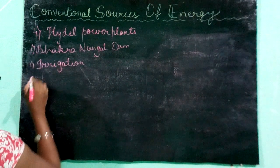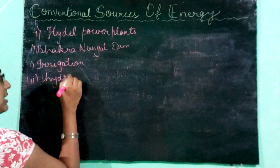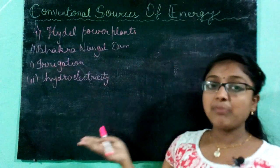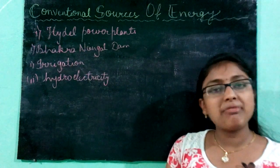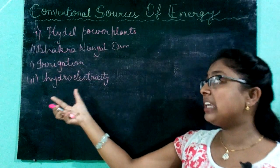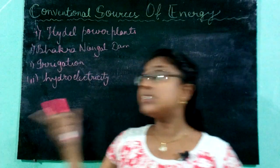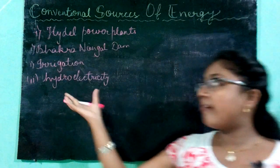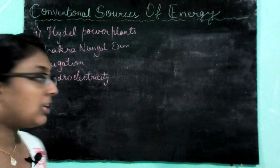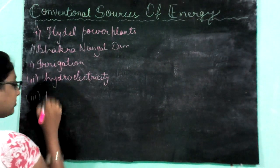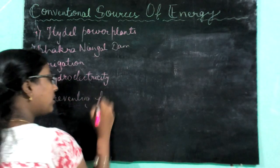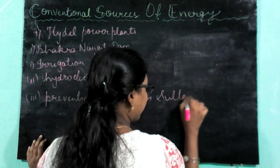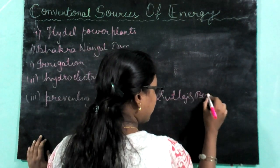The second aim is to generate hydroelectricity, which is the cheapest and cleanest source of energy and also a renewable source. The third aim is preventing flood from the Sutlej and Beas rivers.